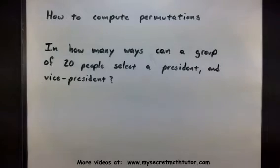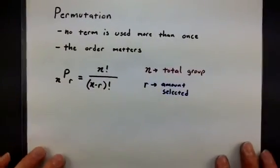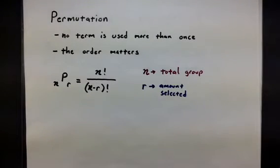In order to see how permutations will play a part with this, let's take a look at what a permutation is. Basically in a permutation we want to select items, but we want to make sure that no item is used more than once. More importantly, the way we select these items, the order makes a difference or the order matters.